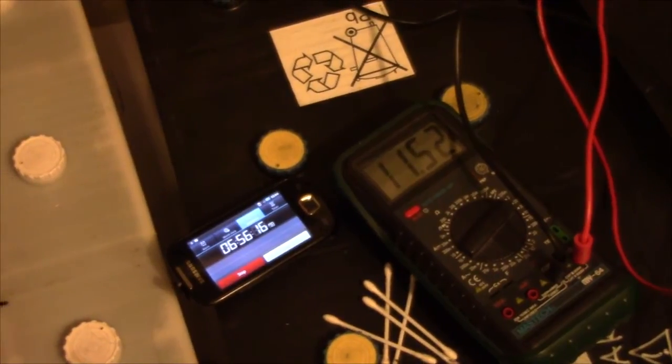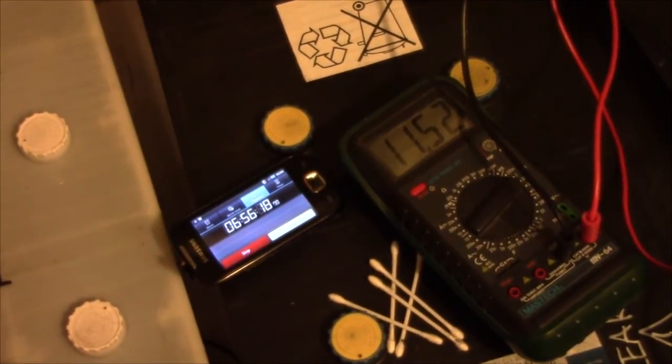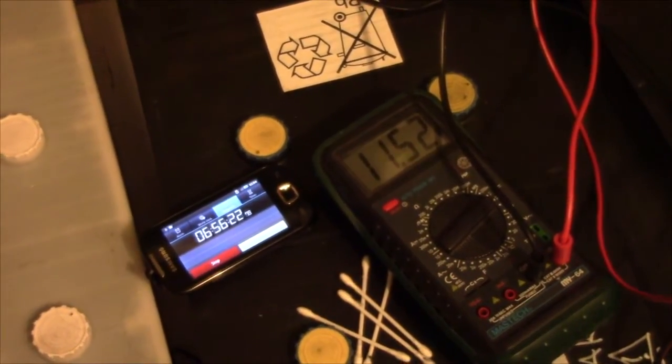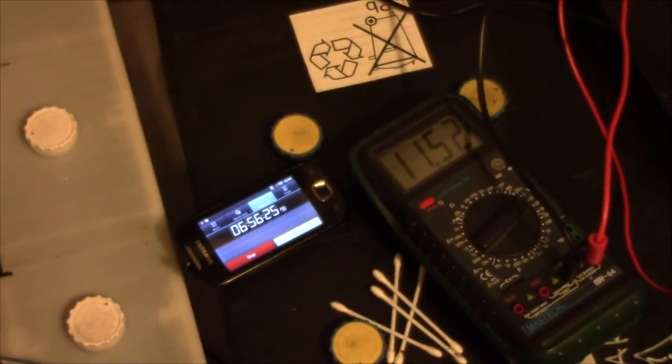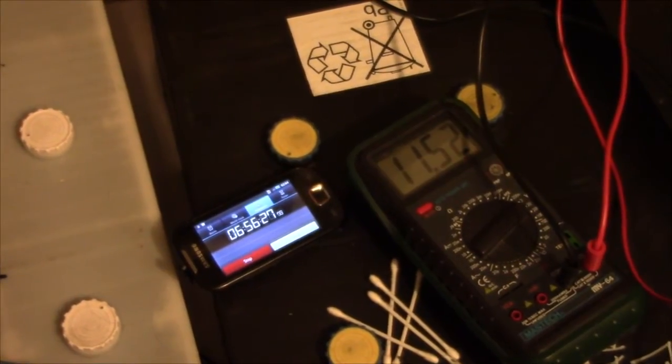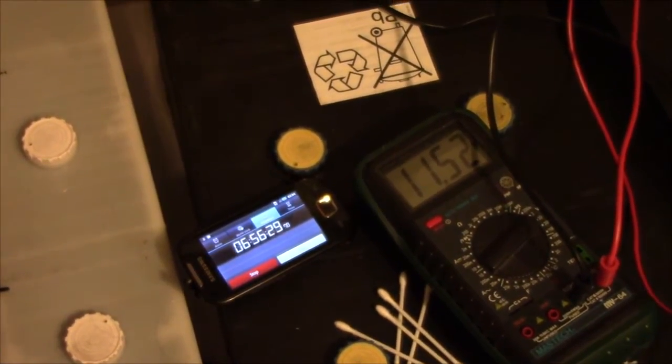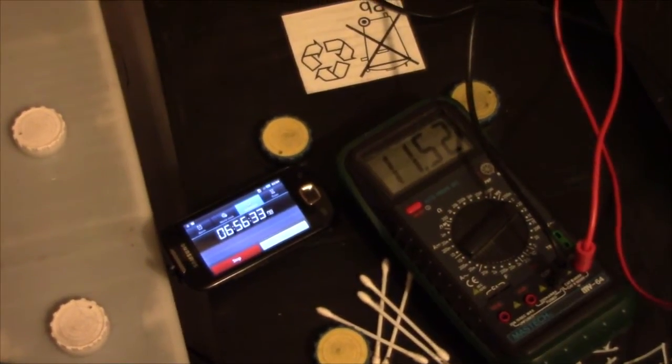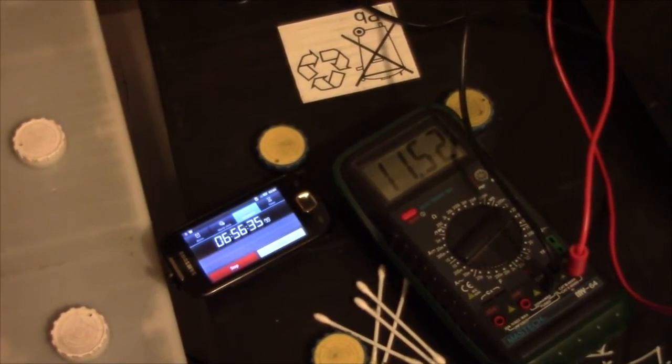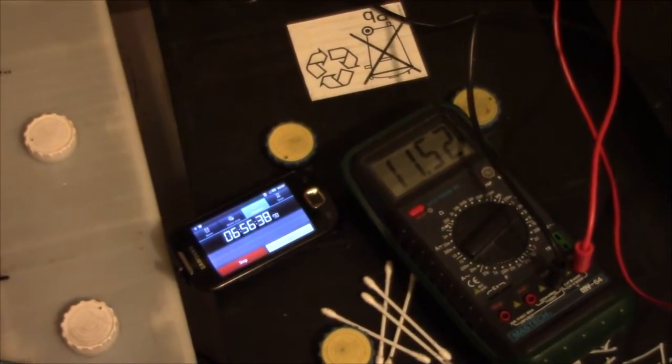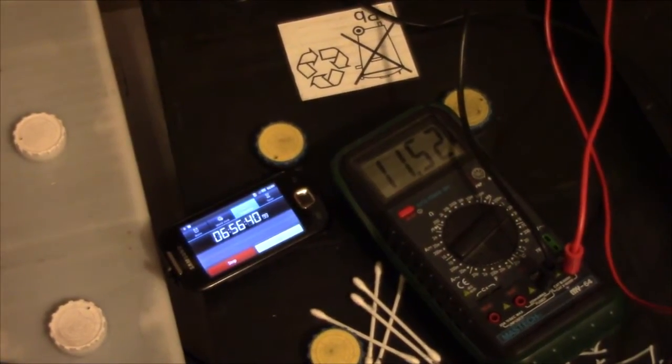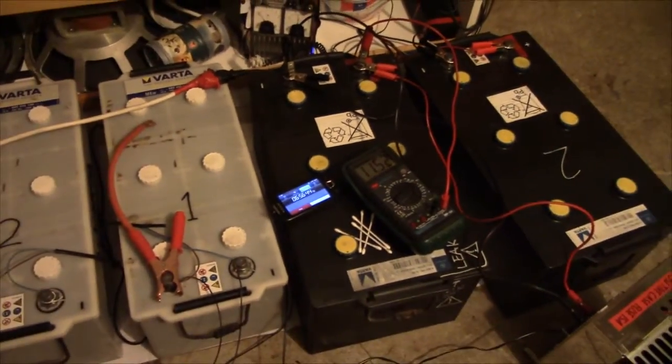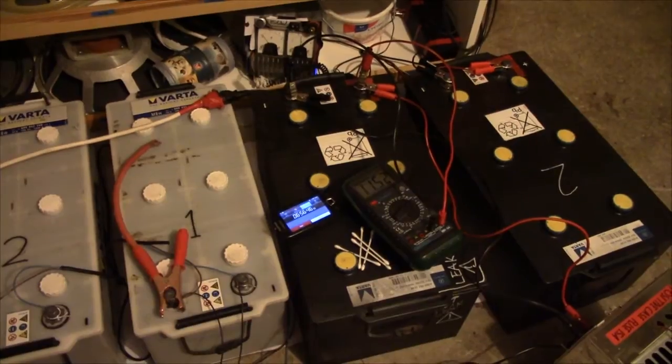And would you look at that. We're 70Ah in and we are starting to approach the knee of the discharge curve, but we are still not even close to 11 volts. This battery is going to run for quite a long while, probably at least another hour. I am almost certain it's going to do two more hours. That's quite a step up from 67 or so amp hours.